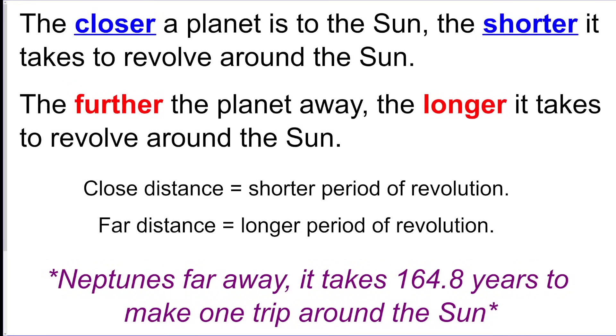The closer the planet is to the Sun, the shorter it takes to go around it. It's a shorter path. So the further it is away, the longer it takes to go around the Sun. So this is called period of revolution, how long it takes to revolve.